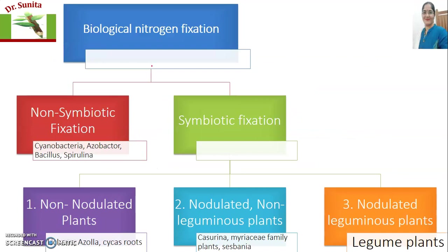Biological nitrogen fixation is broadly of two types: non-symbiotic fixation and symbiotic fixation. In non-symbiotic fixation, there is no association between the fixing bacteria and the plant. Examples include cyanobacteria (a type of algae), azotobacter, bacillus, or spirulina.